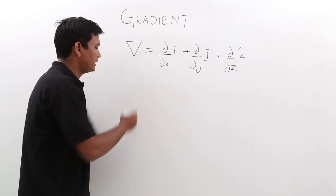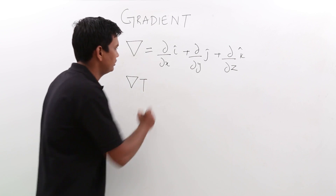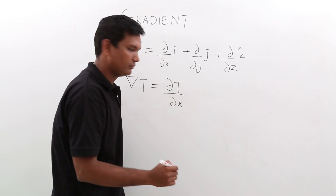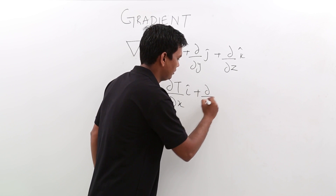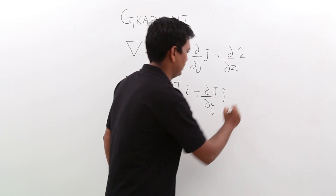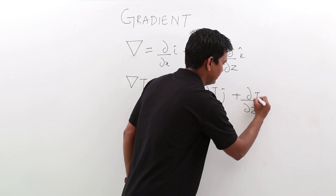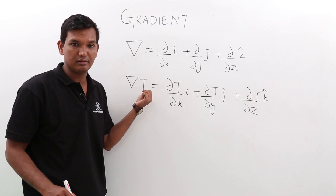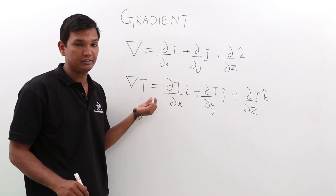Let us see how we can find the gradient. Let us say delta t is given, where t is the temperature. The gradient would be del t/del x of i-cap plus del t/del y of j-cap plus del t/del z of k-cap. Remember, t is a scalar quantity — temperature is a scalar quantity — so we are finding the gradient of a scalar quantity.